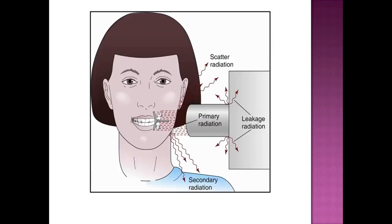So what is a latent image? This is a basic picture of x-ray radiation. We are taking an x-ray of these teeth; from the x-ray tube the photons are ejected, they pass through the tooth, and they reach the film where a chemical reaction happens and latent image formation occurs.